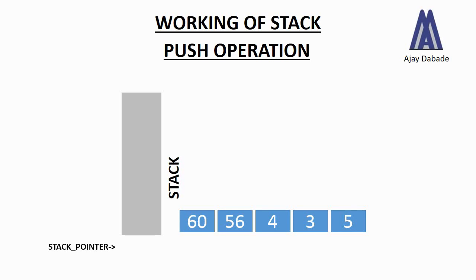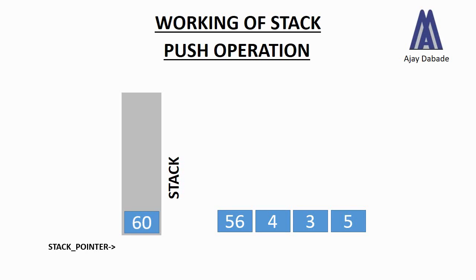Whenever we perform a push operation, we actually push a number or an element into the stack. Here I've shown an animated stack, and there are numbers in front of you. We are going to perform the push operation, so for every push operation we will be putting a number into the stack. This is the first number that goes inside the stack. Whenever we push a number, there will be a stack pointer — currently it is not pointing to anything.